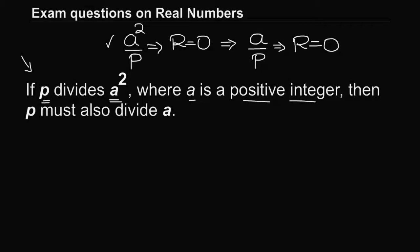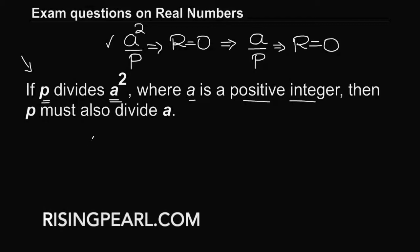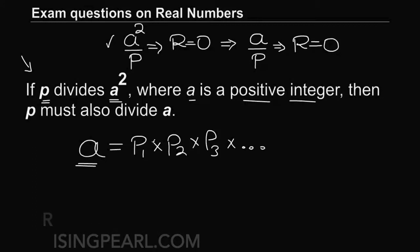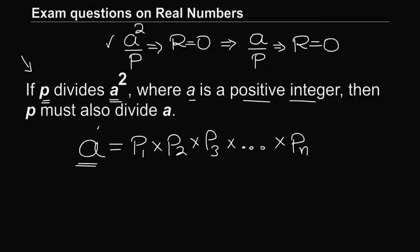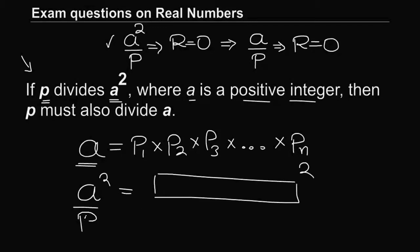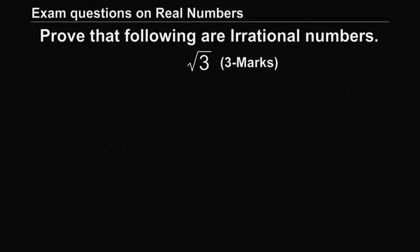This follows from the fundamental theorem of arithmetic — let me know in the comments if you want me to explain this. From the fundamental theorem of arithmetic, all composite numbers can be expressed as a product of prime numbers in one unique way. So when we square a number, each prime factor gets squared, and if that result is divisible by P, it simply means one of those prime numbers must be P.